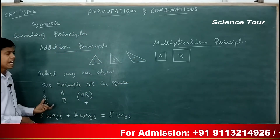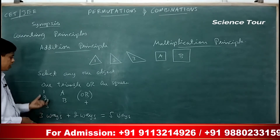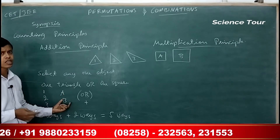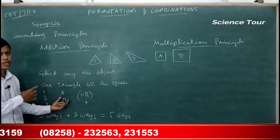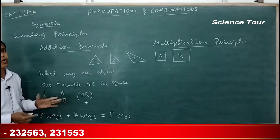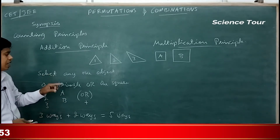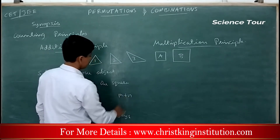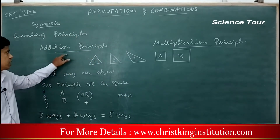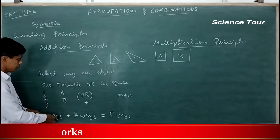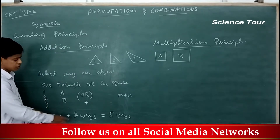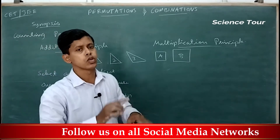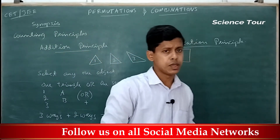Imagine there are m ways of doing one work and there are n ways of doing the second work, independent of each other. Then totally how many ways are there? That will be m plus n ways — that is called the addition principle. There is no link between the first operation and the second; they are independent of each other.